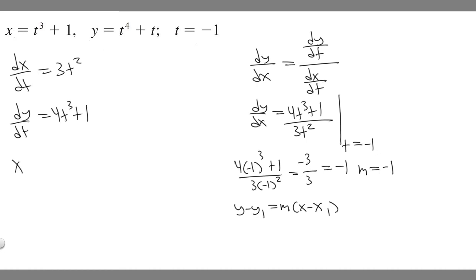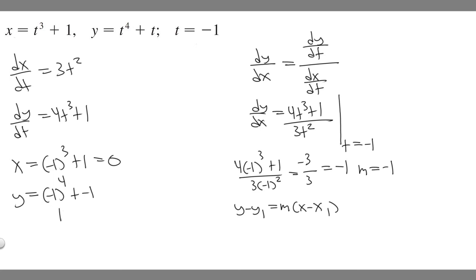Plugging in minus 1 for x: minus 1 cubed is minus 1, plus 1 is just 0. Now for y: minus 1 to the 4th plus minus 1. Minus 1 to the 4th is 1, and plus minus 1 is minus 1, so y equals 0. The point is (0, 0), which makes this one kind of easy. So x₁ equals 0 and y₁ equals 0.